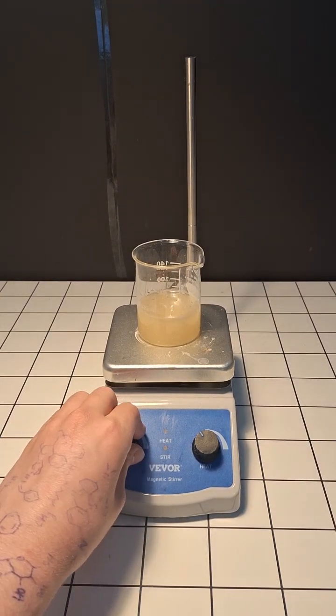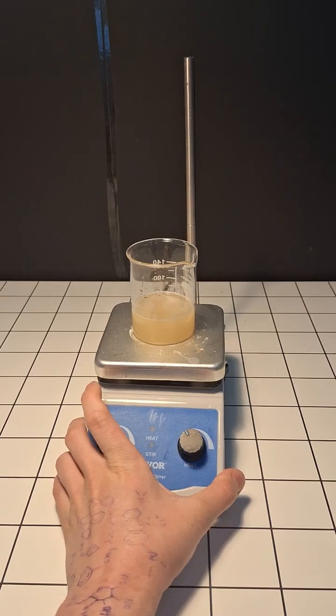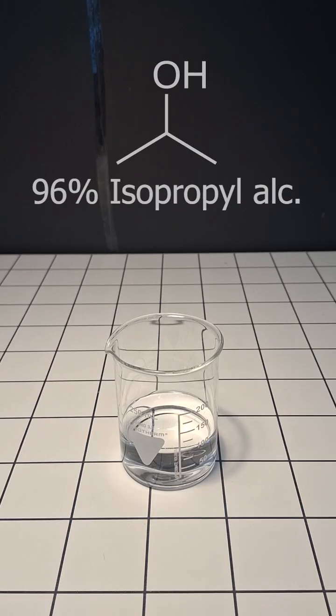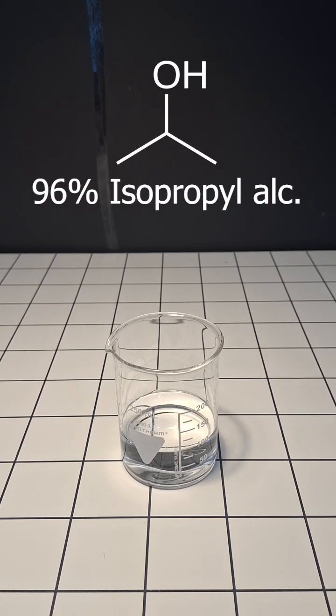At this point, the solution should be ready, and we can now move this to the side. The next thing that we're going to need is 100 mils of 96% isopropanol.